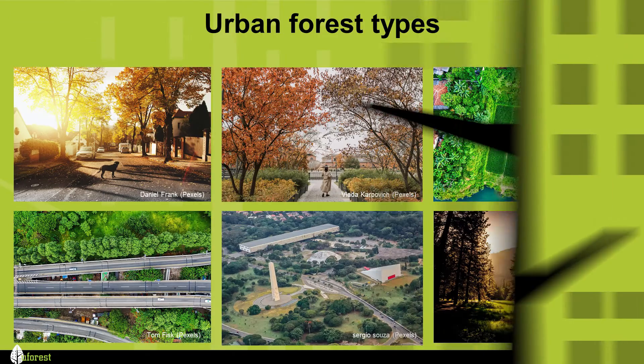A tree map enables urban forest managers to identify and prioritize urban canopy goals, for example planting and maintenance, while accounting for the condition of the urban forest — for example, dead, critical, poor, fair, good or very good.